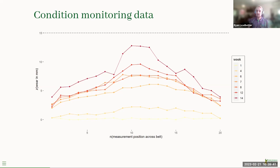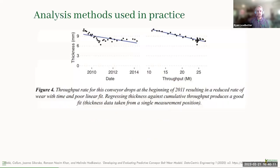Over time the belt starts fairly flat in week one and then wears into a kind of dished V-shape by week 14. Engineers assign what's called a soft failure threshold — beyond a certain point there's too great a risk of the belt being damaged. If the belt passes that threshold, they change it. So they're trying to forecast when any point on this growing curve will cross, say, 15 millimeters, because beyond that the carcass is at risk of being damaged by the ore.